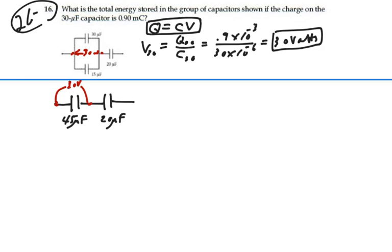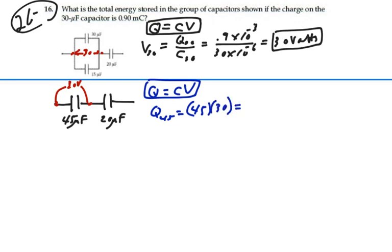We know the 45 microfarads has 30 volts across it, so we can calculate its charge: charge equals capacitance times voltage. The charge on 45 microfarads equals 45 microfarads times 30 volts, which is 1350 microcoulombs. That should also be the charge on the 20 microfarad capacitor, because the two capacitors are in series, and capacitors in series have the same charge.